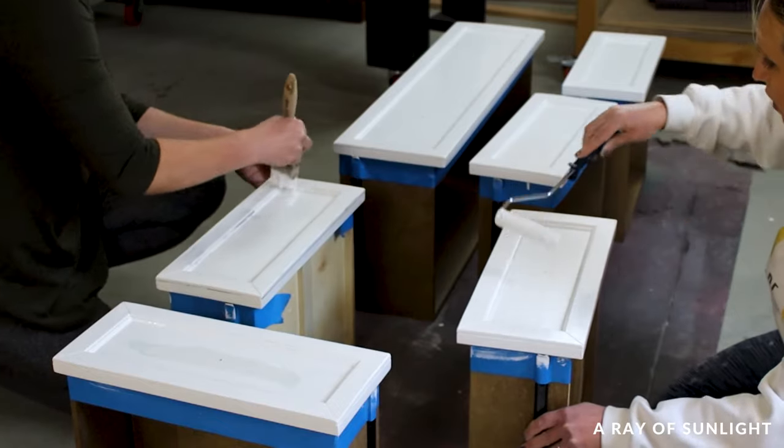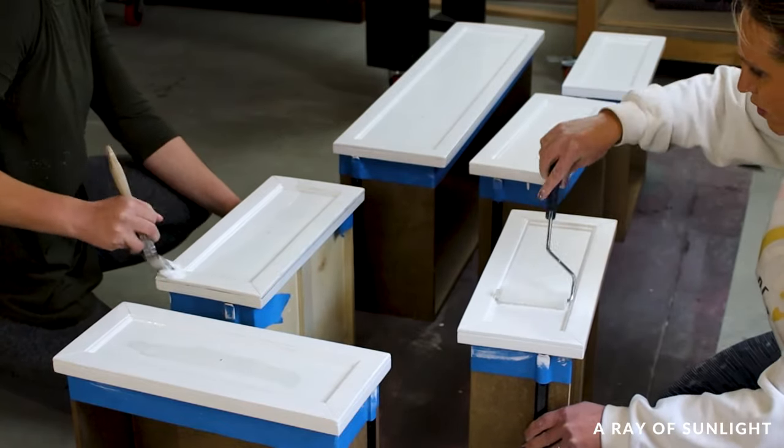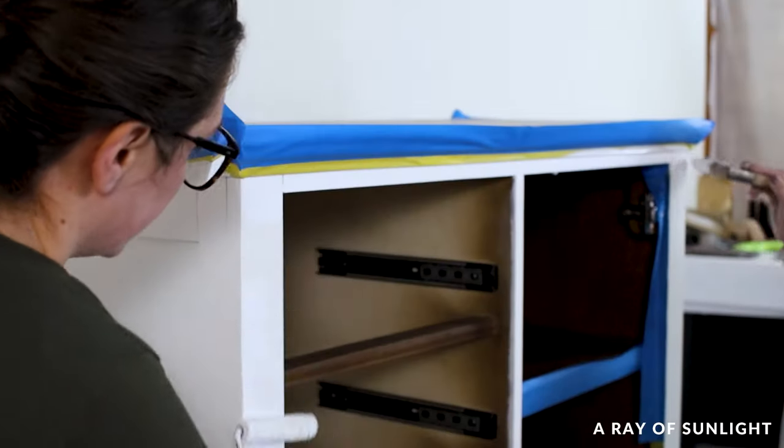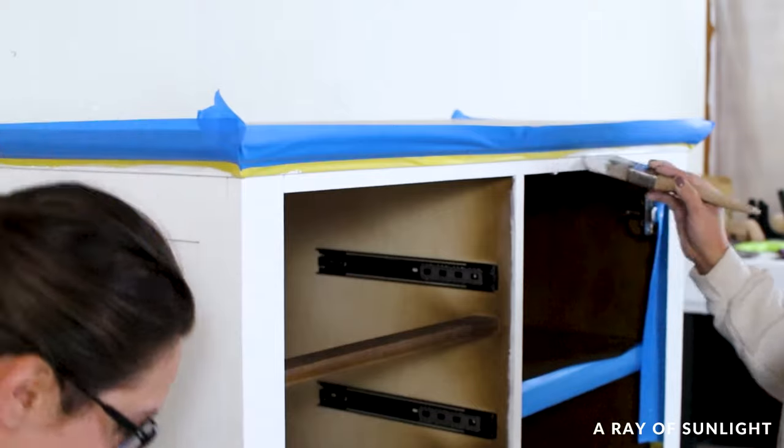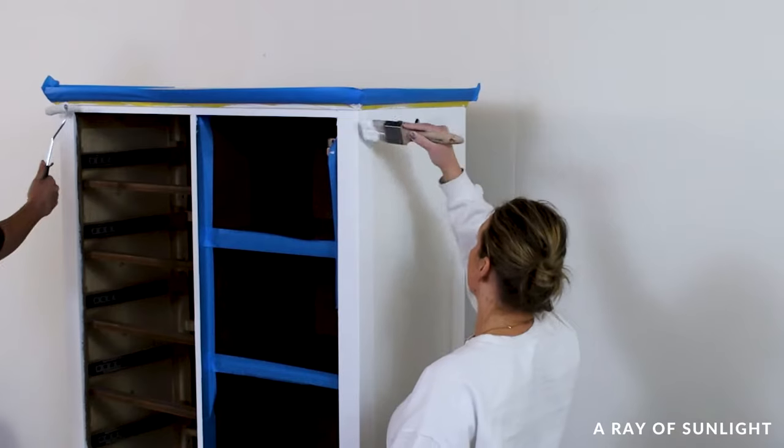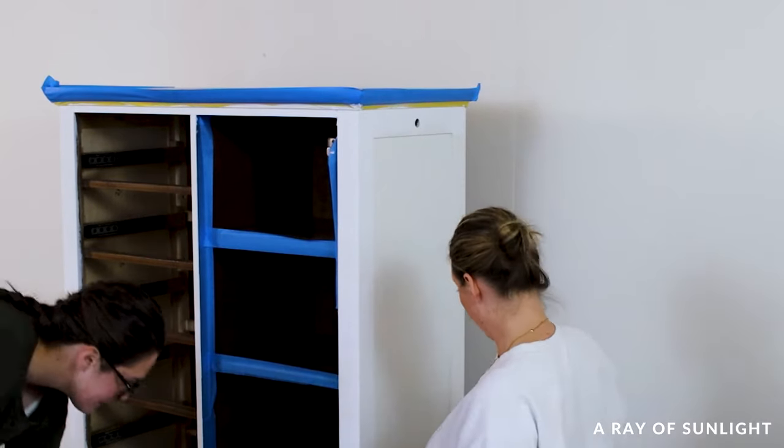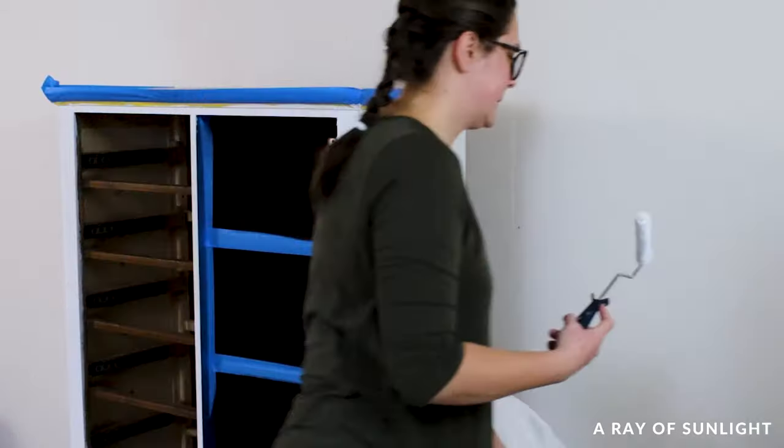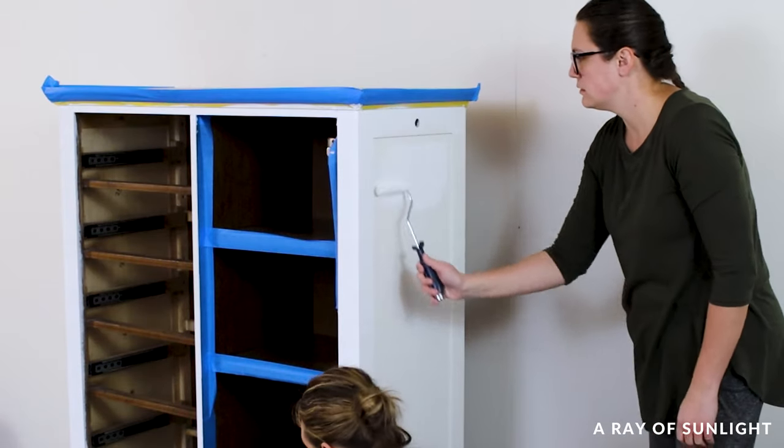Then we brushed and rolled on some Sherwin-Williams emerald urethane trim enamel in the color pure white onto the rest of the armoire. This paint is high quality self-leveling trim paint that dries to a very durable finish. I've sprayed it on in the past, but we just brushed and rolled it on this time with a zebra paint brush and a mohair mini roller. We painted two coats on everything, letting it dry completely between coats.